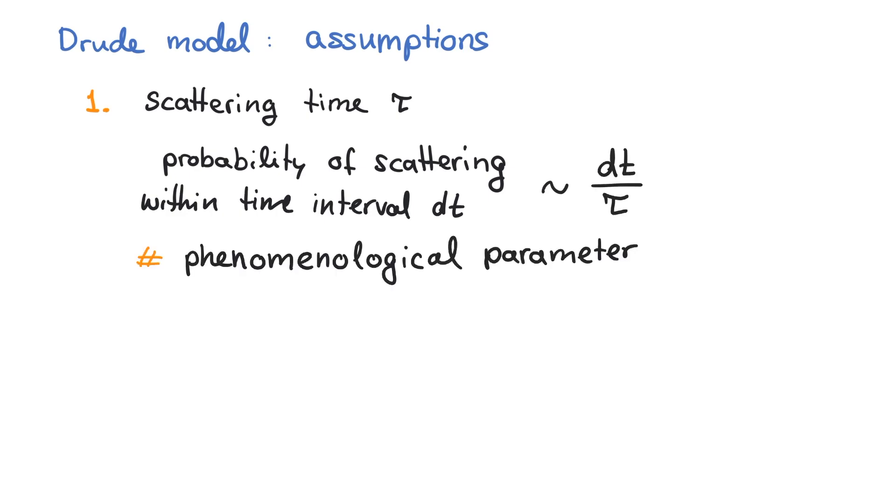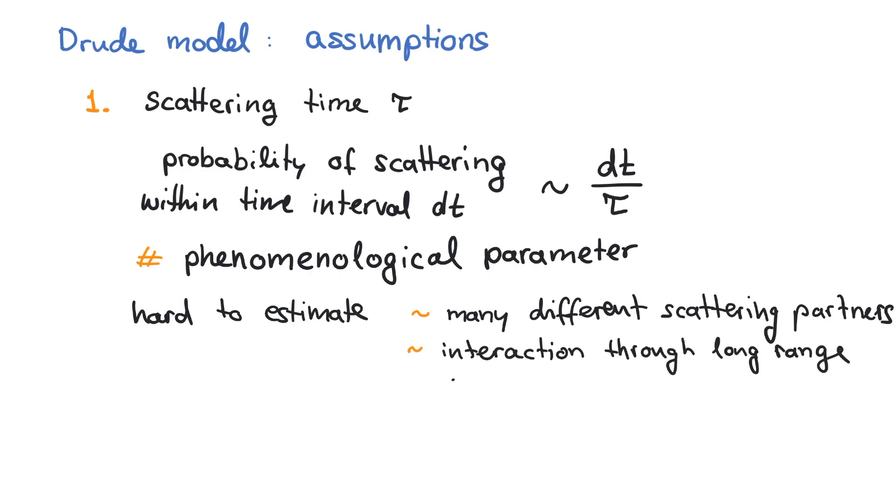Tau should be understood as a phenomenological parameter. For the kinetic theory of molecules, we could estimate the scattering time tau based on the velocity, density, and scattering cross-section. But it is hard to estimate the scattering time for electrons, as they can scatter with many things besides other electrons in a solid. Also, electrons mainly interact via long-range Coulomb interaction, so it is hard to define a cross-section. Therefore, our first assumption is just that this scattering time tau exists.